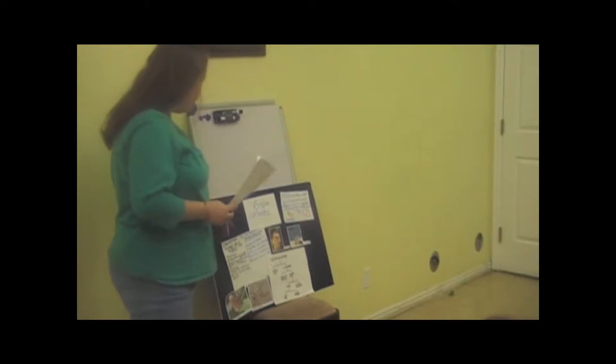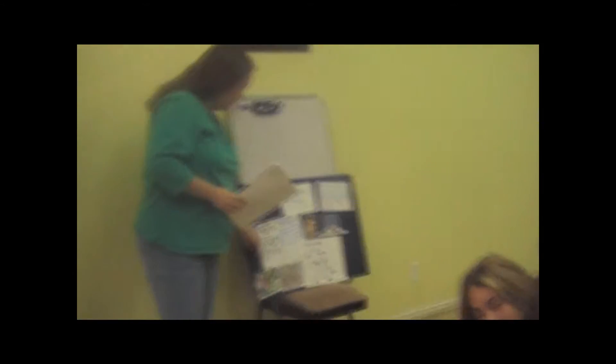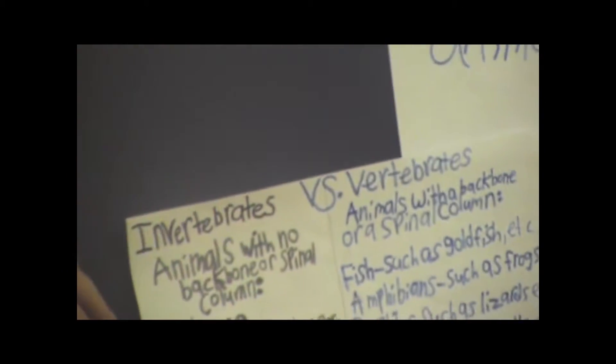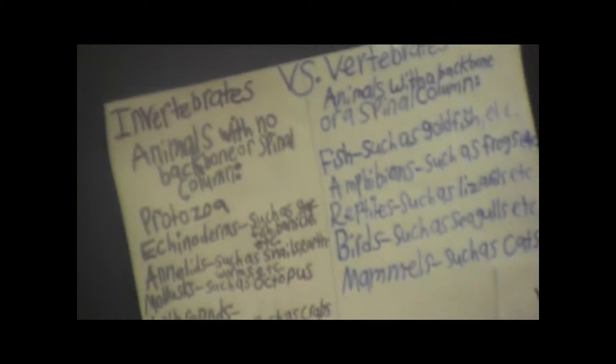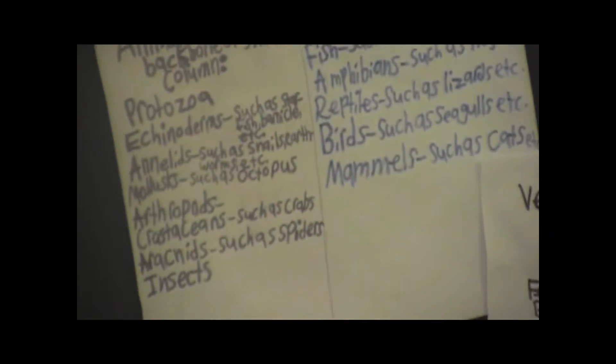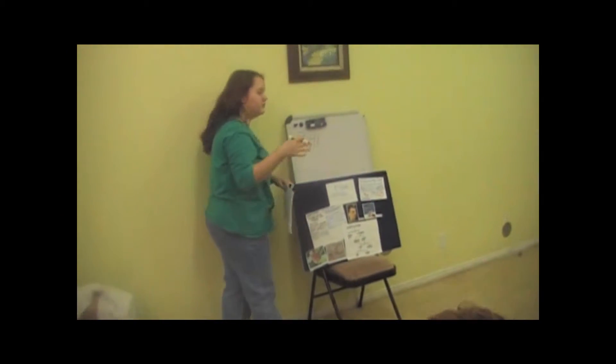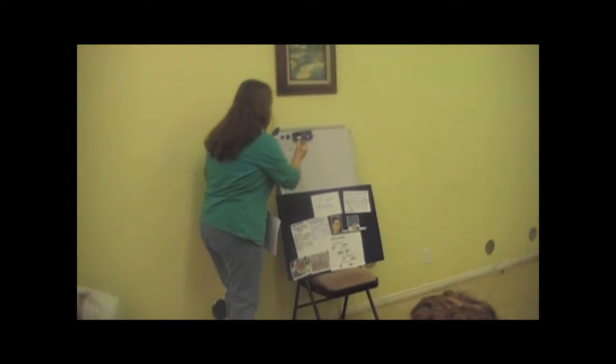In order to see what the differences and characteristics are, we need to place animals in groups and break down those groups into even smaller groups. In biology, there are 34 phyla, or groups. Phyla is the plural of phylum, or group.